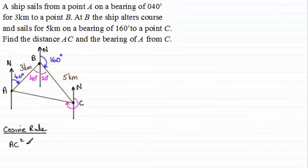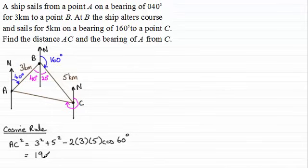We've got the side that we want in this case AC. We square it and it's equal to the sum of the squares of the other two sides. So that's going to be three squared plus five squared and then we subtract twice the product of those two sides. So it's two times three times the five and then we do the cosine of the opposite angle which will be 60 degrees there. Now make sure your calculator is in degrees mode and you should find then that you get this turns out to be 19. So we've got AC squared then equals 19.